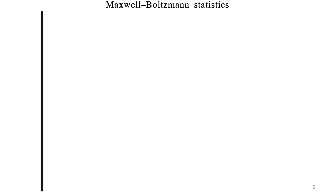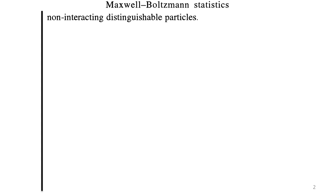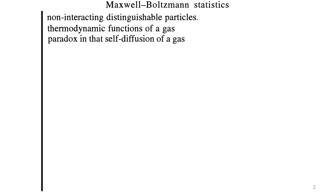Before we start talking about Fermi-Dirac statistics, let's have a quick overview of Maxwell-Boltzmann statistics. In our first unit we applied Maxwell-Boltzmann statistics for a study of non-interacting distinguishable particles in the ideal gas case, obtaining thermodynamic properties of the gas. While discussing those properties we came across a paradox called the Gibbs paradox, which arose while discussing self-diffusion of a gas.